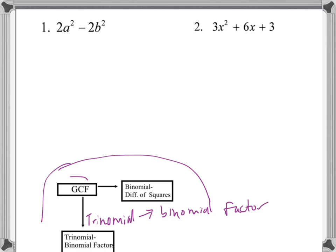The first thing we always do is factor out the GCF. For this expression, the GCF is 2, so we're left with a² minus b².